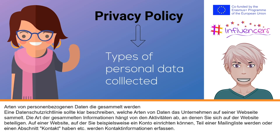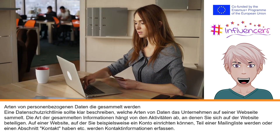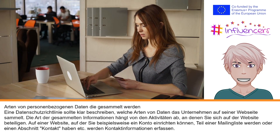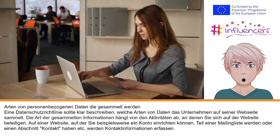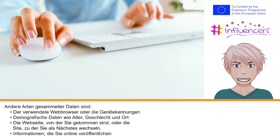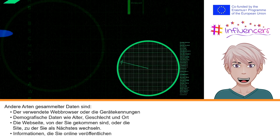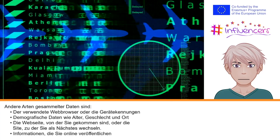The types of information collected will depend on the activities you take part in on the site. For example, a website that allows you to set up an account, become part of a mailing list, or has a contact us section will collect contact information. Other forms of data collected include the web browser used or device identifiers, demographics like age, gender and locality, the site you came from or the site you go to next, and information that you post online.